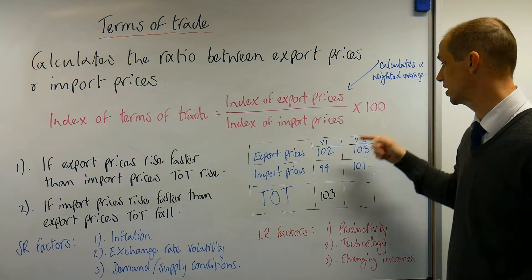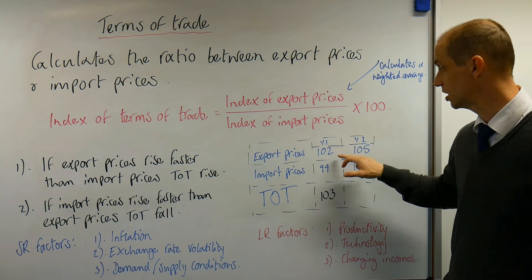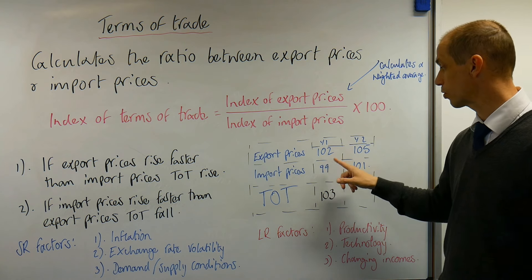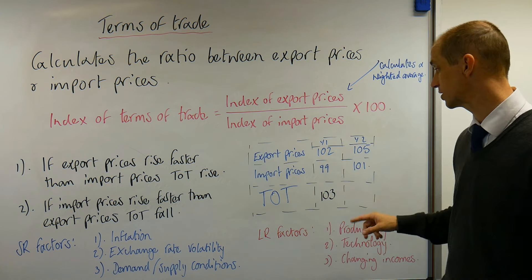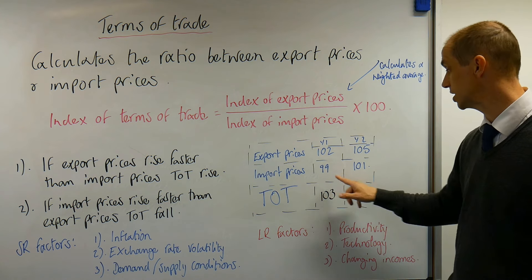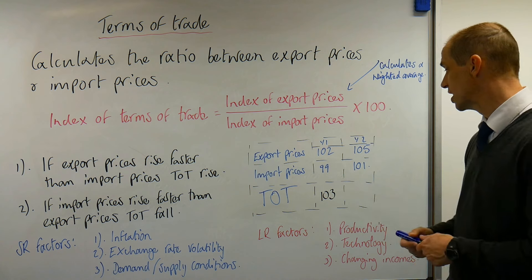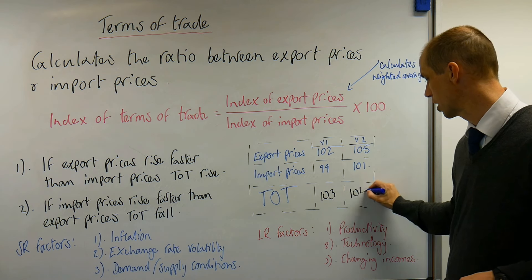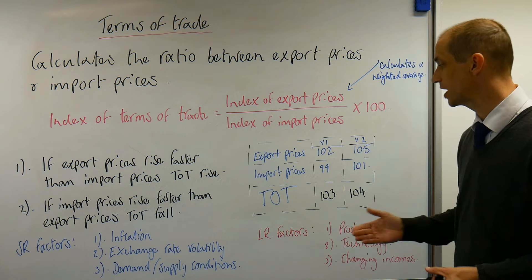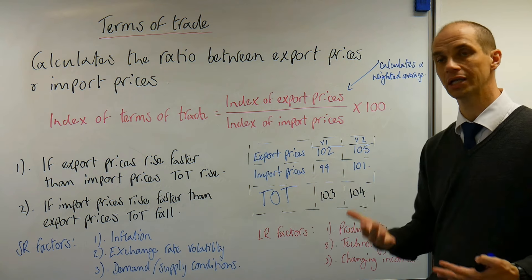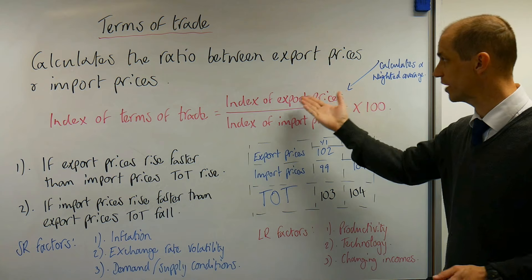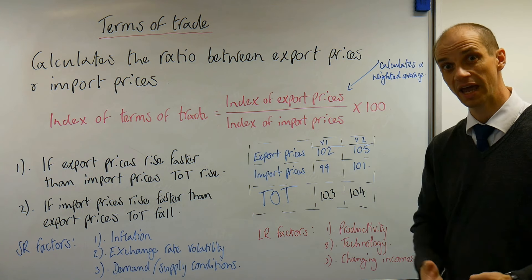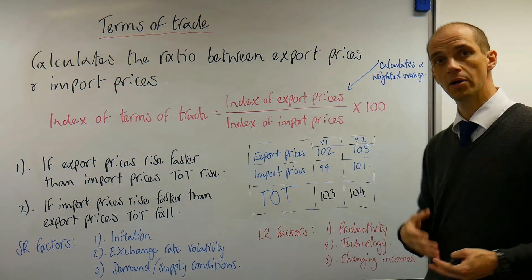Moving to Year 2, export prices have risen further from 102 to 105 on the index, while import prices have moved from 99 to 101. Putting these numbers into the calculation gives approximately 104, so the terms of trade continue to improve, and the number of exports needed to receive that given basket of imports is again reduced.